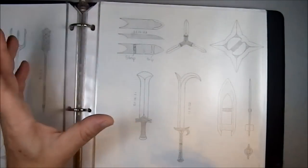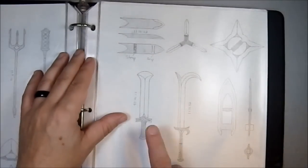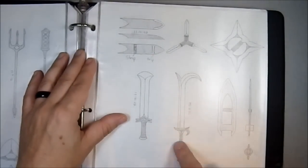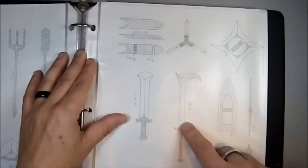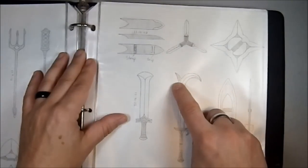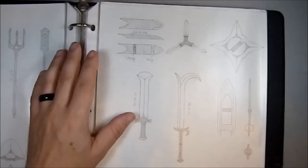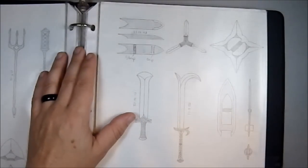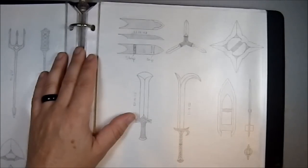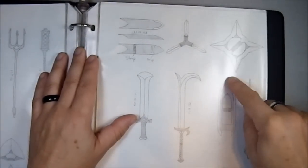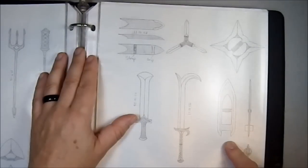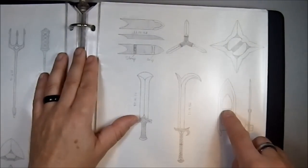I call this a dwarven short sword. Here we have a fantasy sword, over the top, with a hook and a point, kind of taken from a martial art style. It's the hook weapon in Chinese martial arts, I don't remember the name.